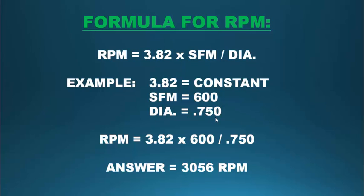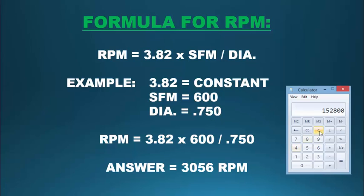If we plug those numbers into the calculator, we take 3.82 multiply times 600 and then divide it by 0.750 diameter, we get an RPM of 3056.